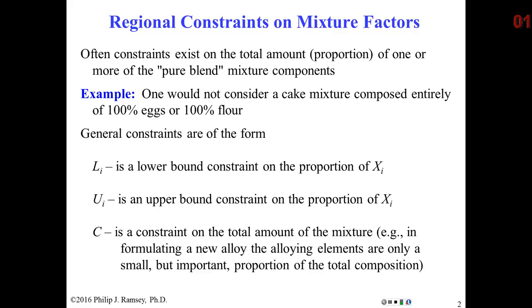And visually, you'll see why in a moment we refer to them as regional constraints. There's a lower bound. A minimum amount must be present. There can be an upper bound, in which case there's a maximum amount that can be present. And sometimes there's a constraint on the total amount.